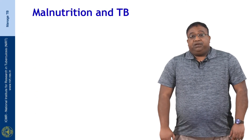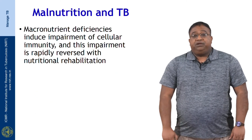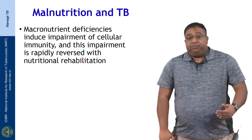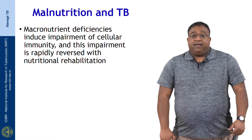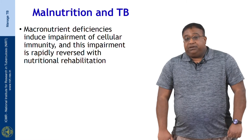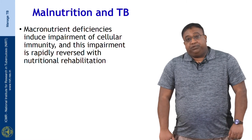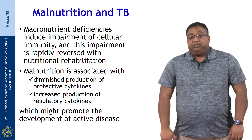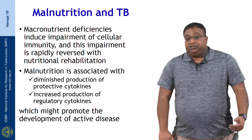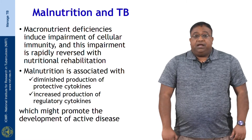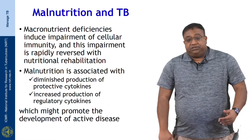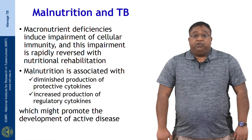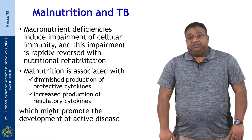When we look at malnutrition, macronutrient deficiencies are known to cause impairment of cellular immunity, and this impairment can be rapidly reversed with nutritional rehabilitation. Moreover, malnutrition is also associated with diminished production of protective cytokines and increased production of regulatory cytokines, both of which might contribute to the promotion of active disease development.